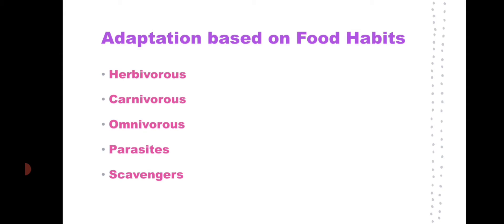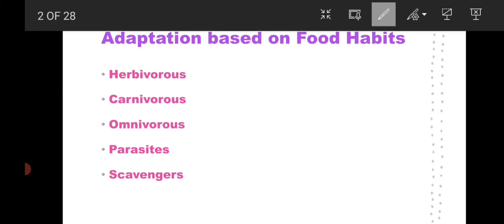I have already explained you about the food habits. Based on this, the animals are divided into 5 categories: Herbivores, Carnivores, Omnivores, Parasites and Scavengers. Let us see all of these one by one.